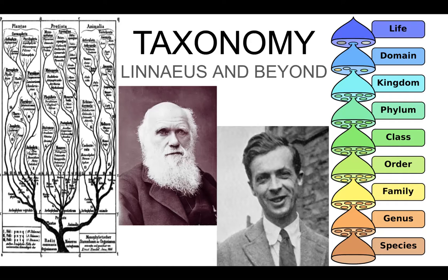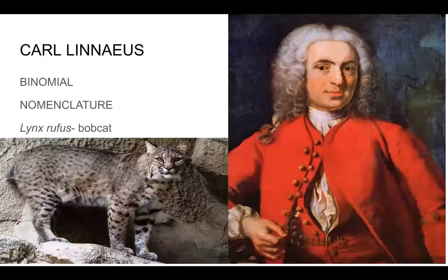We have a diagram of a hierarchical system of naming things. At the top it says 'life' — so the things we'll be talking about are living things. Underneath that it says 'domain,' and there are only three domains: Archaea, Bacteria, and Eukarya. Ms. Ramirez is going to talk about domains more. Now, Carl Linnaeus is the man of the day when we're talking about taxonomy.